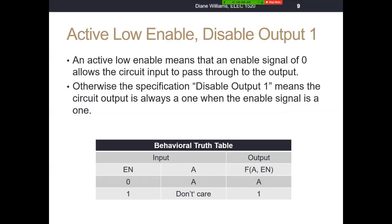The other behavior we can have is an active low enable, disable output one. Active low enable means an enable signal of zero — that logic low of zero — allows the circuit input to pass through to the output. Otherwise, 'disable output one' means the circuit output is always a one when the enable signal is a one. So whenever enable is a zero, whatever's on input A should flow through to the output. But when enable is a one, we don't care what's on A — the output should have a fixed value of one.